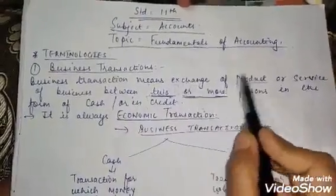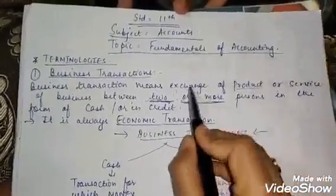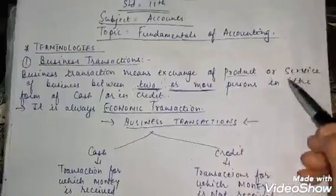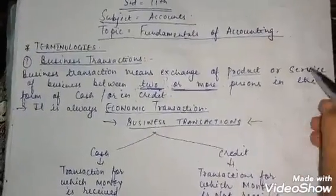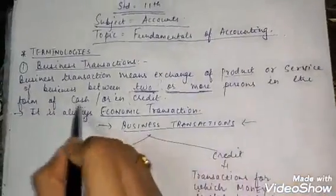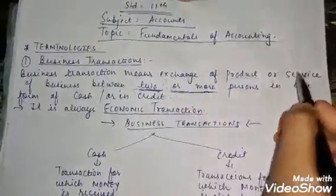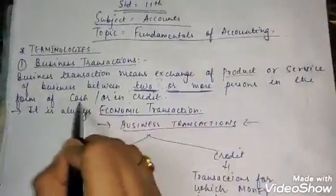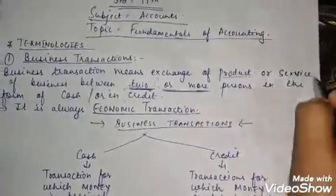Business transaction means an exchange of product or service. A product exchange involves a businessman, and a service exchange involves a professional. For example, if I am giving private tuitions to students, I am providing a service. In return I receive cash. So there is an exchange of service between two or more persons in the form of cash. A transaction can involve either a product or a service.